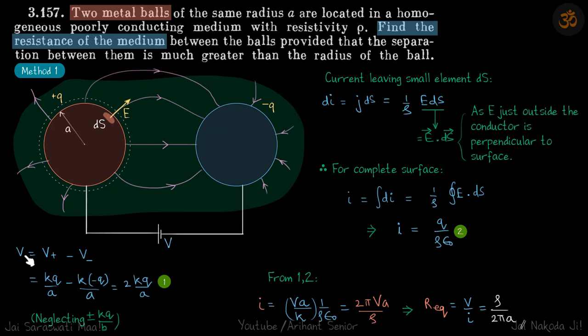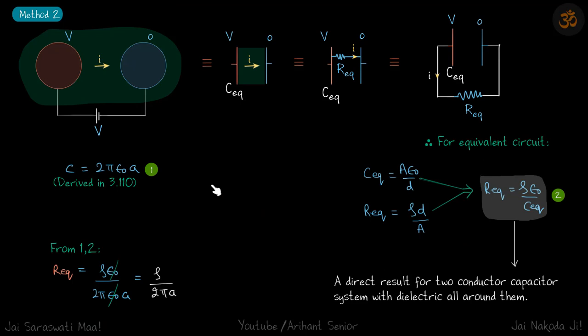Now we have found another term of q here, which we wanted to get rid of. And we will introduce V, which we anyway wanted, because we want to calculate the ratio of V and I. From 1 and 2, we are going to eliminate q, and we get I. Which means R equivalent is the ratio of V and I, and that is equal to rho by 2 pi A. This is the first method to do this. Let us see the second method now.